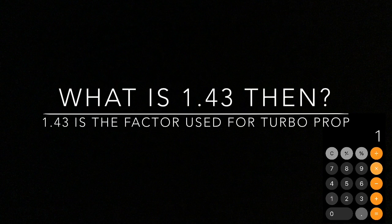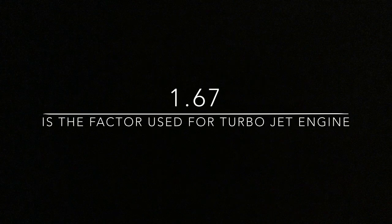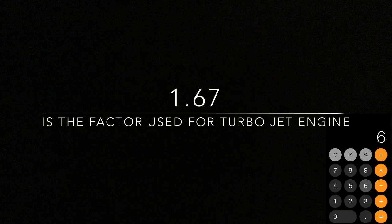The factor 1.43 is used to find the required runway length for turboprop engines, because 70% multiplied by 1.43 equals 100. For turbojet engines, the factor is 1.67, since the turbojet must stop within 60% of the runway, and 60% multiplied by 1.67 also equals 100.